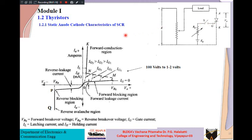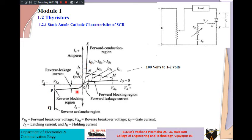After that we studied the static anode-cathode characteristics. They are called 'static' because we are not applying any varying gate signal — either no gate signal or a fixed DC gate current, not varying. If you apply Ig equal to zero or a fixed Ig, the characteristics obtained for the SCR are known as static anode-cathode characteristics.